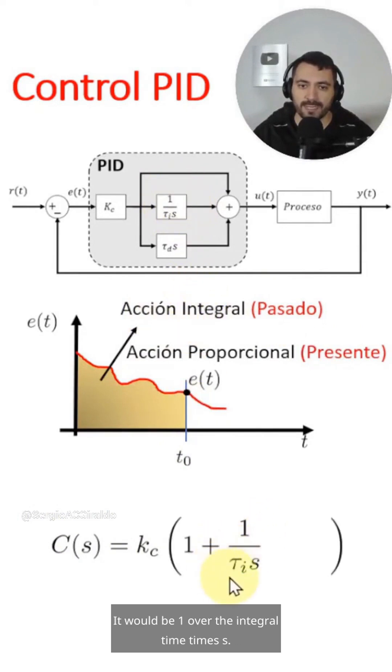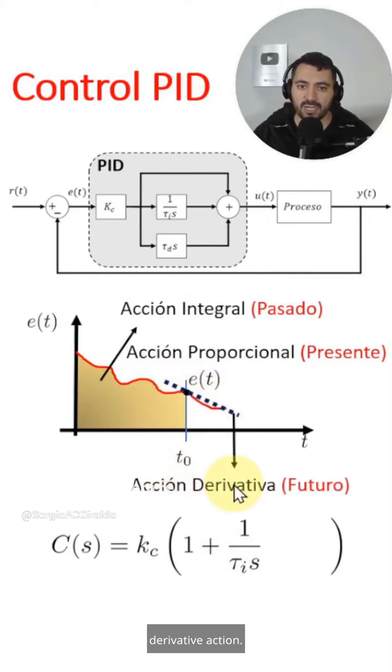It would be 1 over the integral time times s. If we apply Taylor's series at this point, calculating the tangent to the curve, we can predict the future error, which is given by the derivative action. It would be the derivative time multiplied by s.